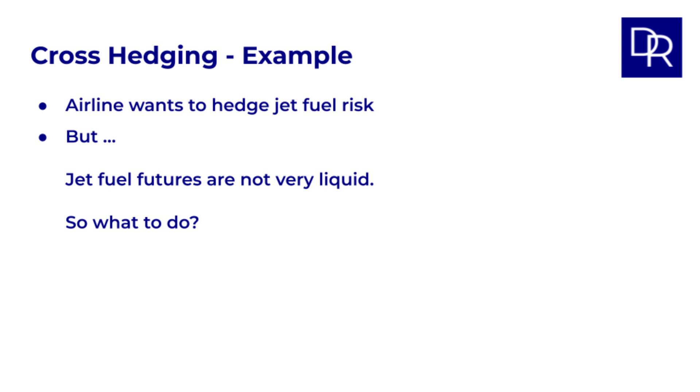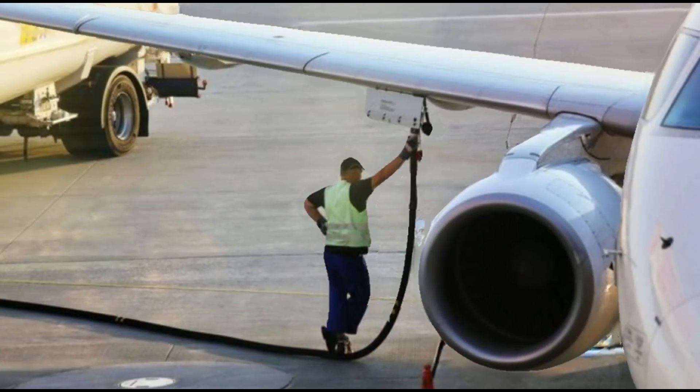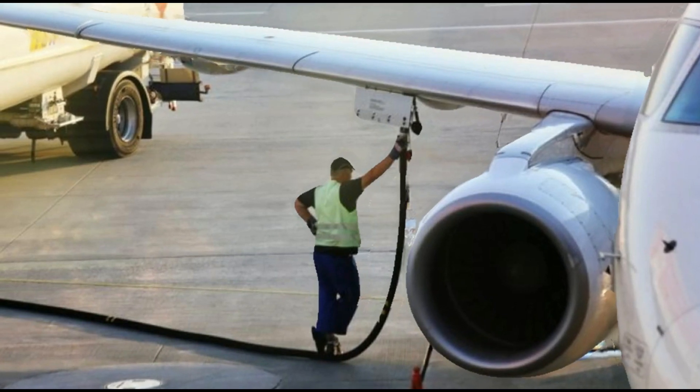This is where cross hedging comes in. Instead of hedging with a perfect instrument, they use futures on a related asset. A very common strategy is to use crude oil futures to hedge jet fuel price risk. Crude oil is refined into jet fuel so their prices are related, but they aren't the same thing.